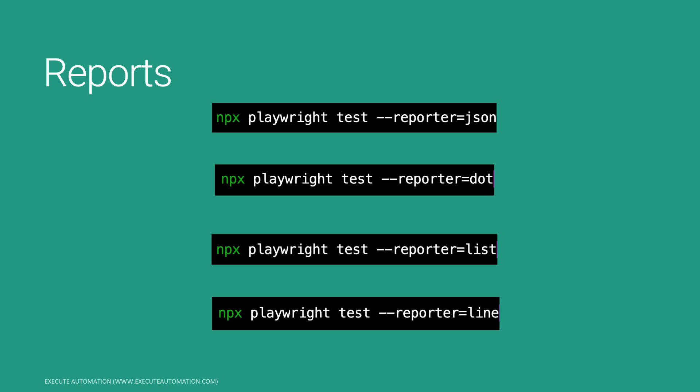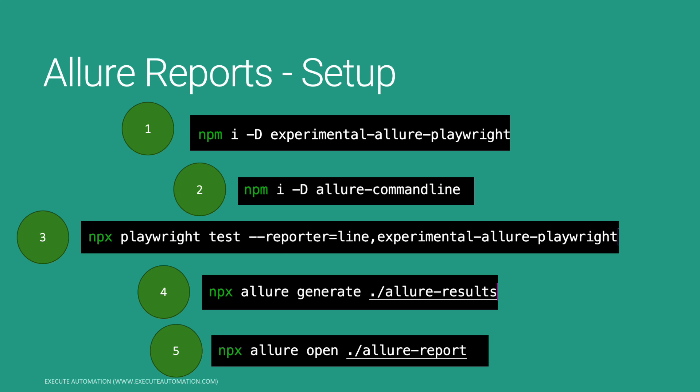Playwright also added support for Allure reporting, but for Allure reporting you need to do some additional configuration, which we'll be discussing in this video. It is still in experimental stage, so you need to install the experimental `allure-playwright` package. Once you have that installed as a dev dependency, you also need to install the Allure command line, which you'll use to generate the report. Then you can run the test as usual with `npx playwright test`, but specifying the reporter as the experimental allure-playwright package.